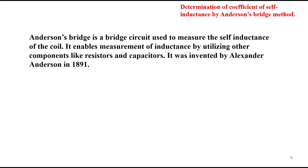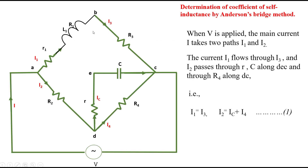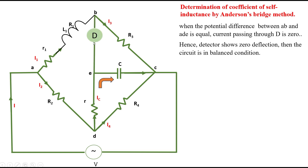It is a bridge used to measure the self inductance of the coil. It enables the measurement of the inductance by utilizing the resistors and capacitors. I3 carries the same current as I1, and I2 is equal to IC plus I4. This detector shows zero deflection because no current is flowing through it.